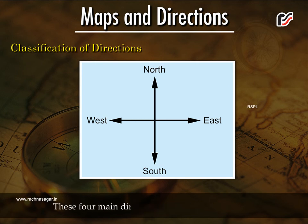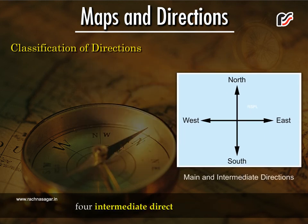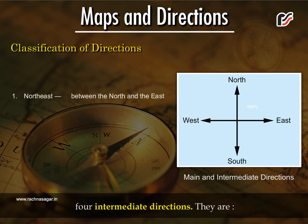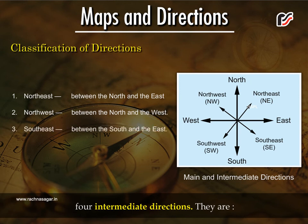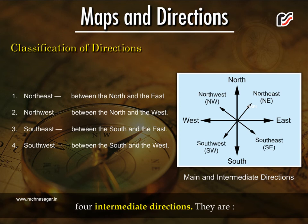These four main directions are further divided into four intermediate directions. They are: 1. North-East, i.e. between the north and the east. 2. North-West, i.e. between the north and the west. 3. South-East, i.e. between the south and the east. 4. South-West, i.e. between the south and the west.